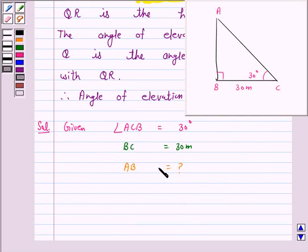Now, to determine AB we choose a trigonometric ratio which involves both AB and BC. We will choose tan 30 as the ratio involves both AB and BC.